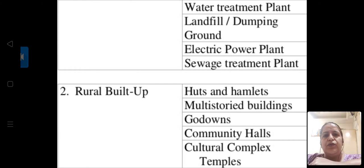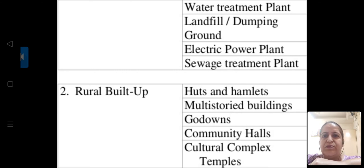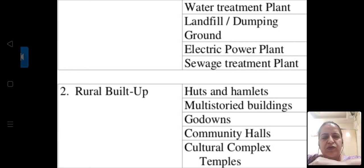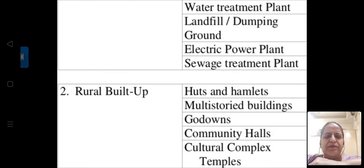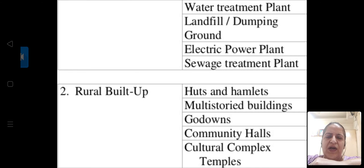Rural built-up land use includes huts and hamlets — hamlets being settlements smaller than a village. Multi-story buildings are now appearing in rural areas too as villages have moved toward development through social media, awareness, knowledge, and education. Godowns are there because there are quite a few factories and small industries in rural areas. Community halls, cultural complexes, and temples — including Ashtavinayak temples — also come under rural built-up land use.